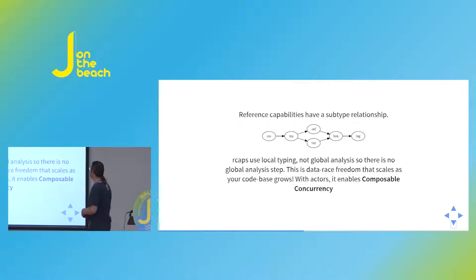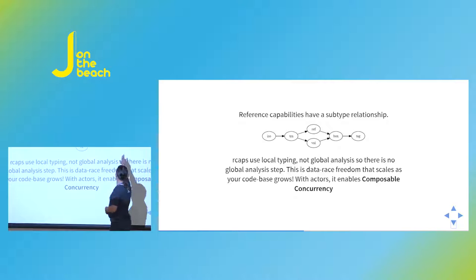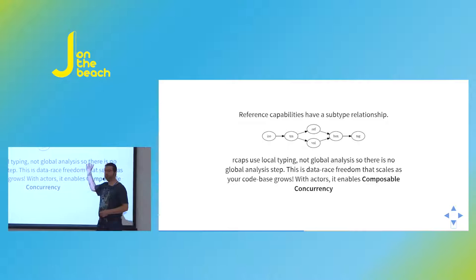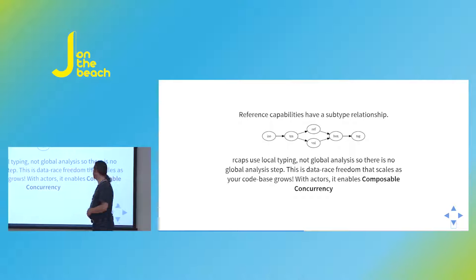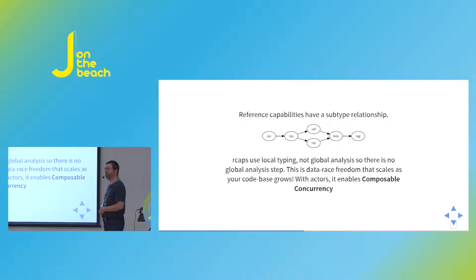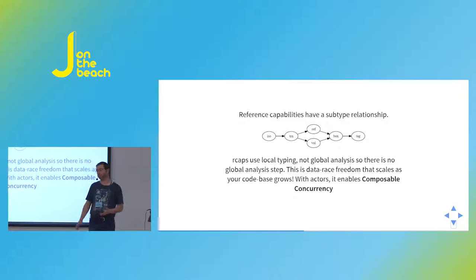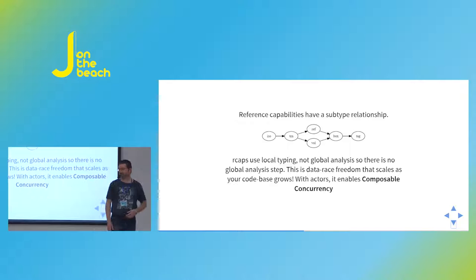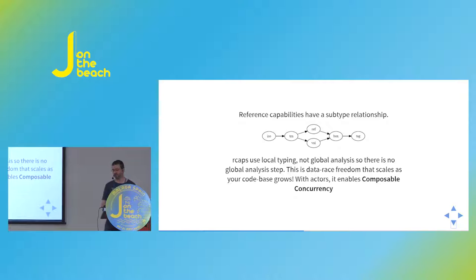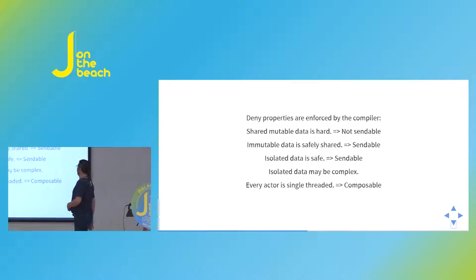There's a subtype relationship across capabilities from the most denied — tag — to the least — ISO. When writing generics, you spend time looking at the subtype graph and how capabilities change based on viewpoint. That's the complex part. It takes about six weeks before you get your head around it and start writing reasonable code. After two or three months it becomes reasonably natural. It's based on denied capabilities, which is a very different way of thinking.